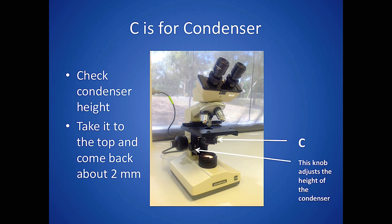C is for condenser, and it's very important to have the condenser at the right height. Generally speaking, you can rack the condenser all the way up towards the stage and then just back it off about two millimeters. That's approximately the right height if you're not using Köhler illumination.